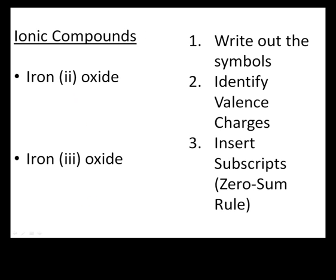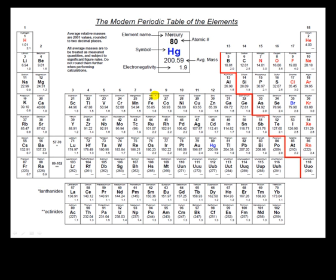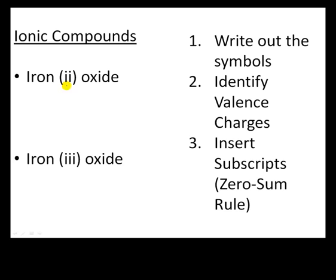Let's do an example. The first one is iron 2 oxide. Before we start, let's double-check we're using the right naming system: iron and oxygen. Looking at the periodic table, iron is in the metal section and oxygen is in the non-metal section. Since we can use this naming system only when a metal is bonded to a non-metal, we're good to proceed. Next step: write out the symbols. The symbol for iron is Fe, and oxide — originally called oxygen — has the symbol O.